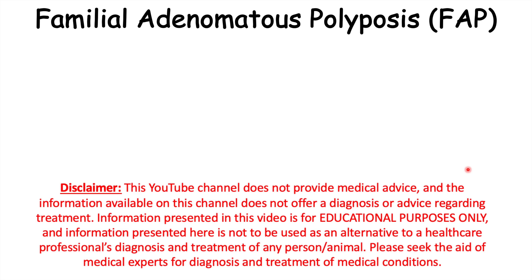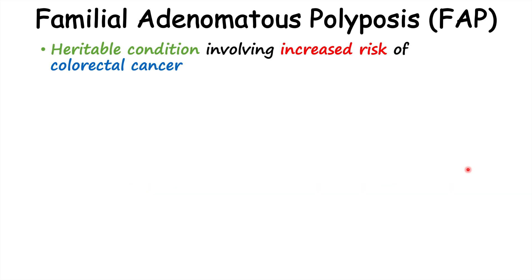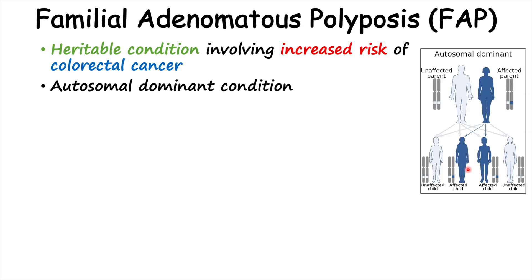In this lesson, we're talking about familial adenomatous polyposis. Familial adenomatous polyposis is an inheritable condition involving increased risk of colorectal cancer, and it is an autosomal dominant condition, which means that you only need one affected allele. That means you are going to have one affected parent with this condition as well, and each affected parent has a 50% chance of passing it on to their children.